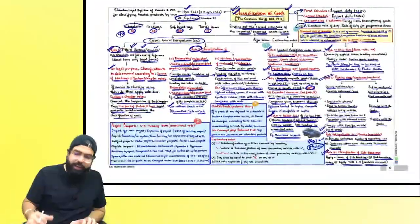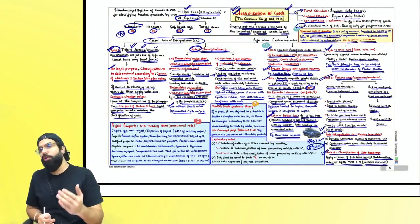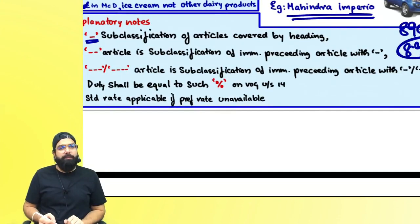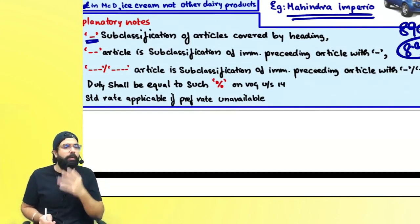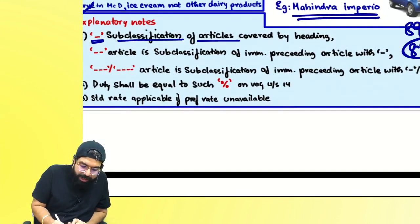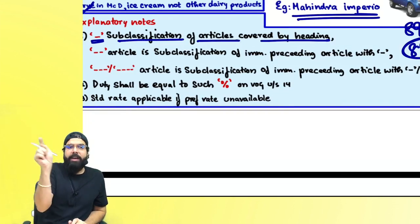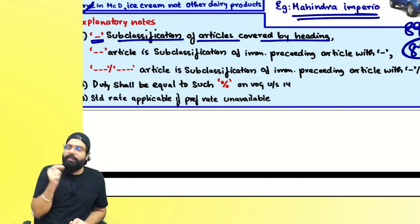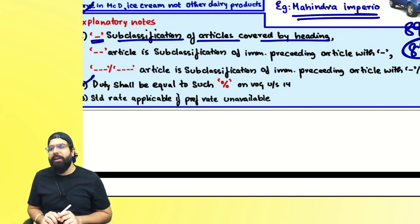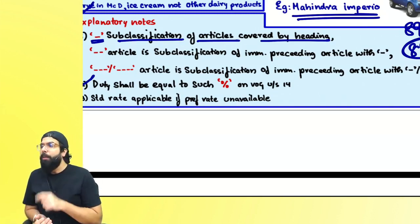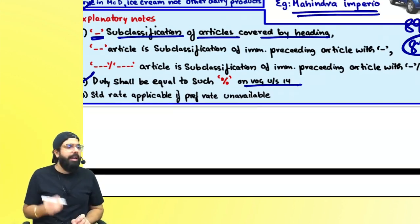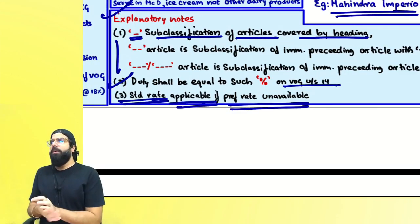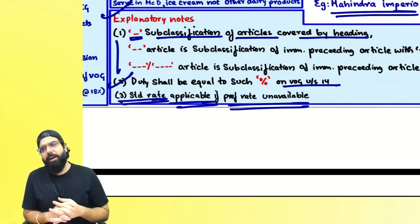Now let's understand the Explanatory Notes. When reading the Custom Tariff Act you will see dashes. A dash (–) means sub-classification of the article covered by the heading; a double dash (– –) denotes further sub-classification, and triple dash (– – –) denotes even further sub-classification. Percentage in the explanatory notes means the percentage of the value of goods under section 14. Standard rate will be applicable if preferential rate is unavailable.